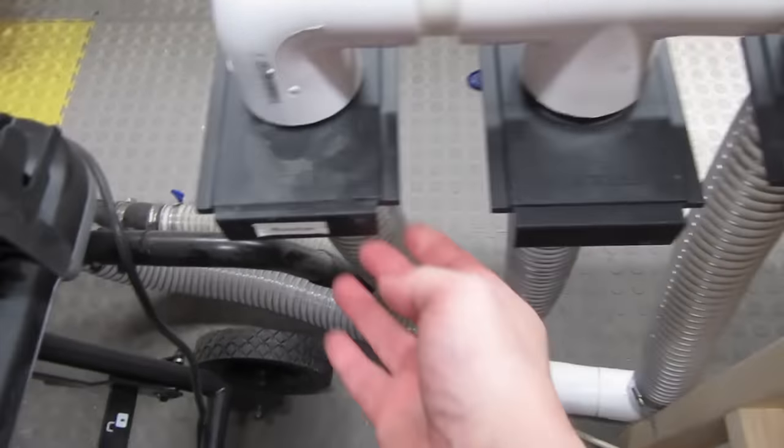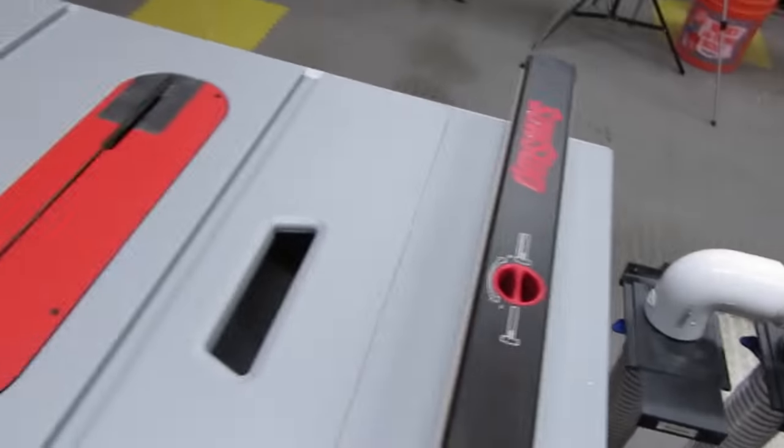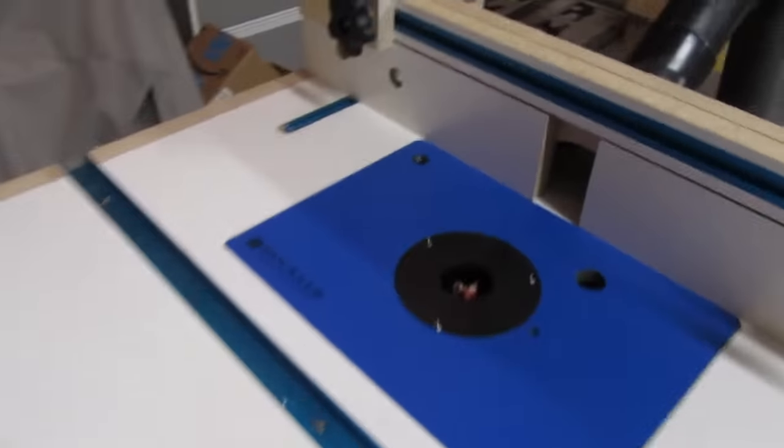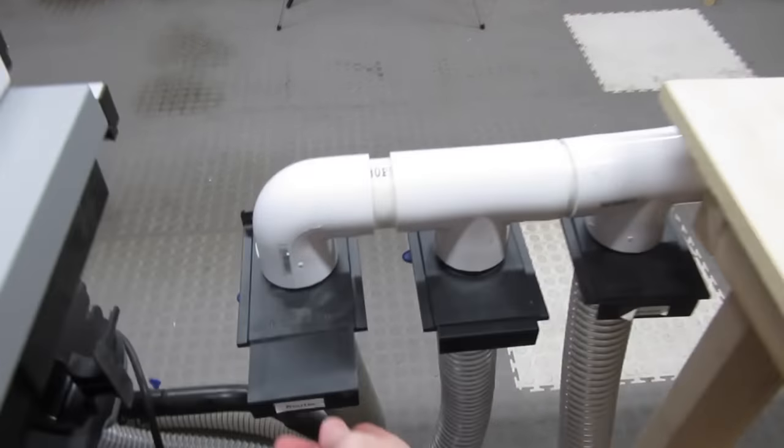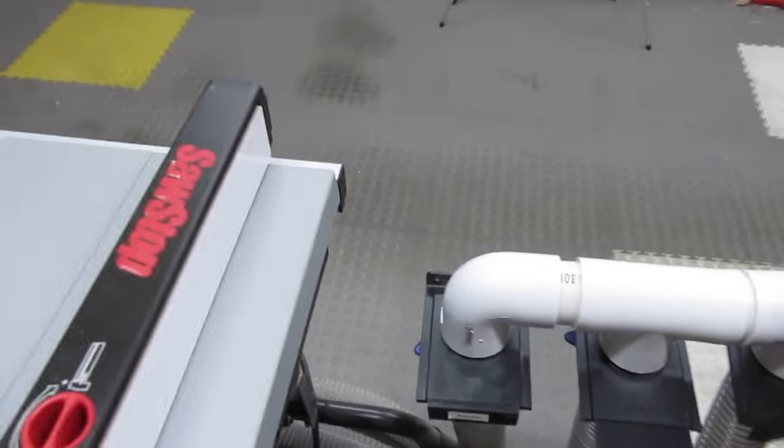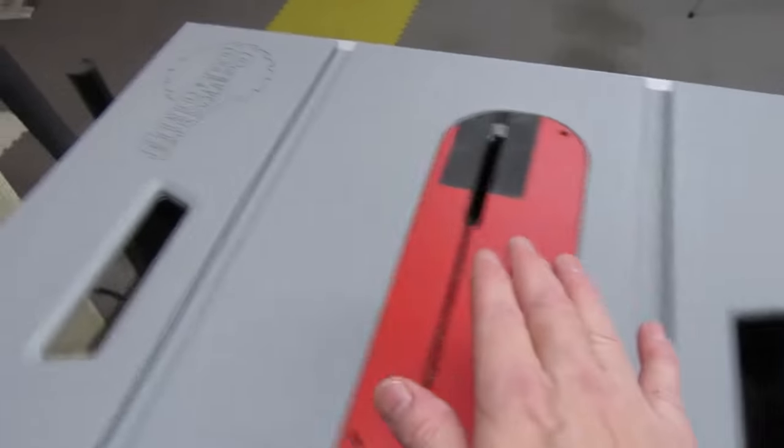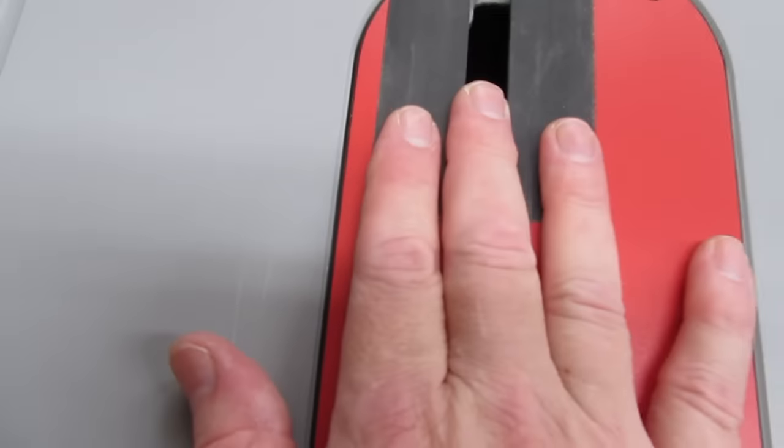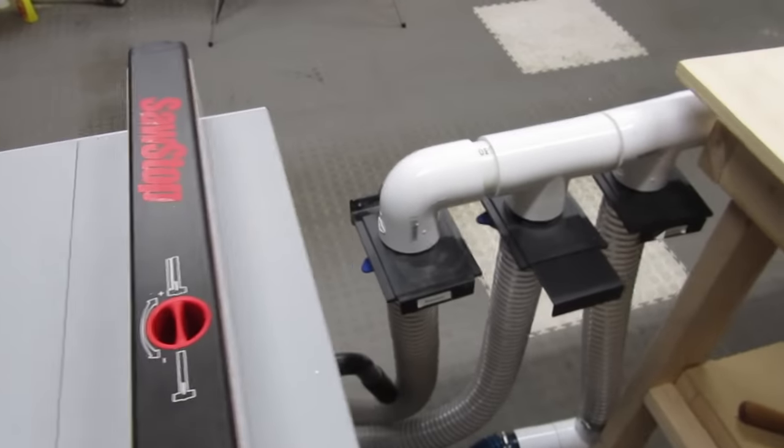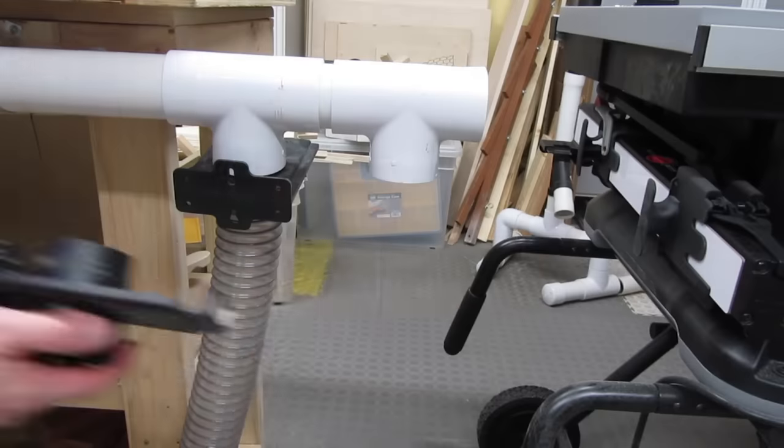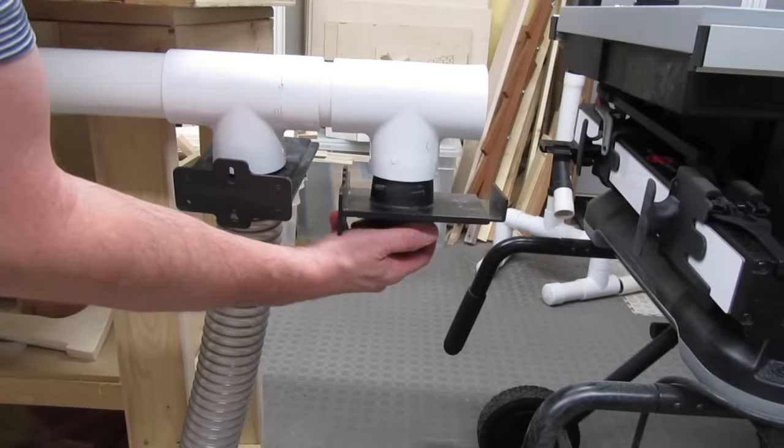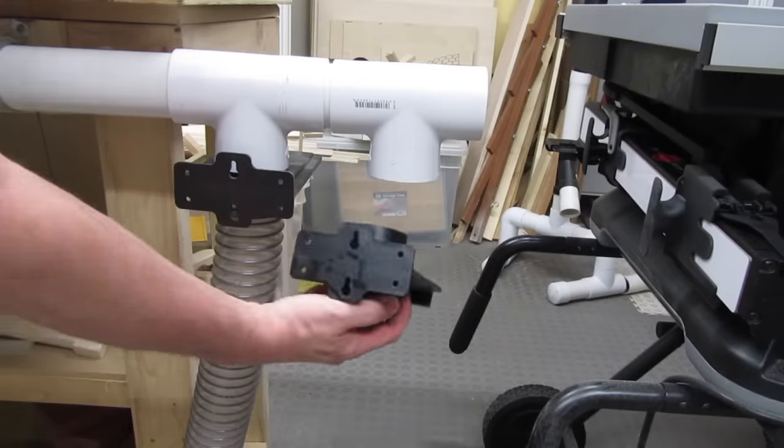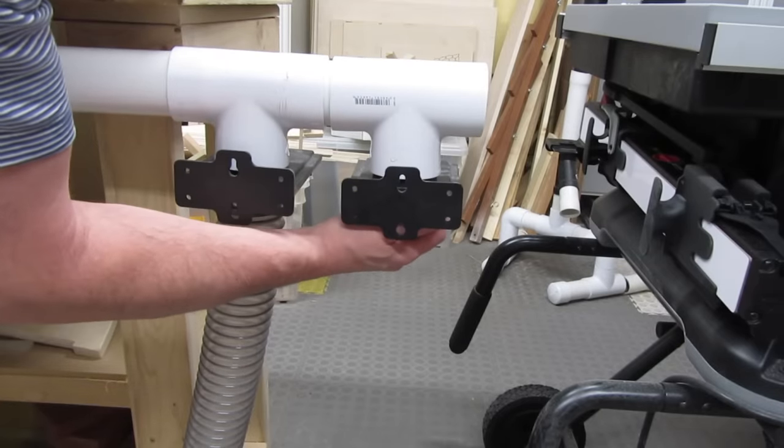So if I close the other gates and open the one for the router table, the shop vac only sucks air from there. If I close that gate and open the one for the table saw, that's the only hose that draws air. By the way, these blast gates don't quite fit into the T and elbow fittings, so I had to mold the PVC to get them to fit. More on that later.